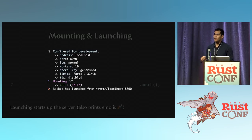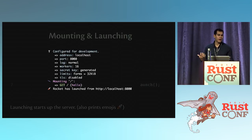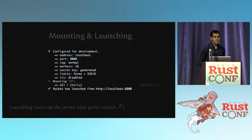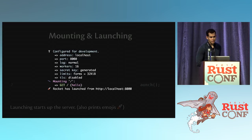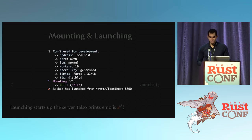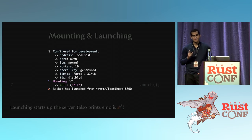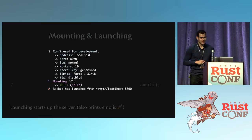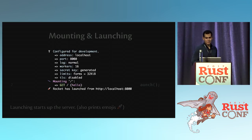It also prints a bunch of emojis, which is a contentious point — it was like the second GitHub issue after Rocket launched. But you get three emojis and Rocket tries to be very helpful while you're developing. It tells you everything it knows about the environment, where it's serving, your application configuration, what routes it knows about, and finally where your application is actually being served. You can try to get rid of them, but they'll come back.